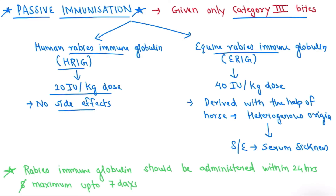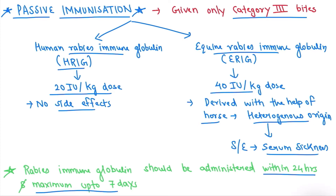In case of Equine Rabies Immunoglobulin (ERIG), the dose is 40 IU per kg. It is derived from horse, so its origin is heterogeneous, and we are going to see some side effects like serum sickness. The rabies immunoglobulin should be administered within 24 hours and maximum up to 7 days. Passive immunization is only for category 3 bites.